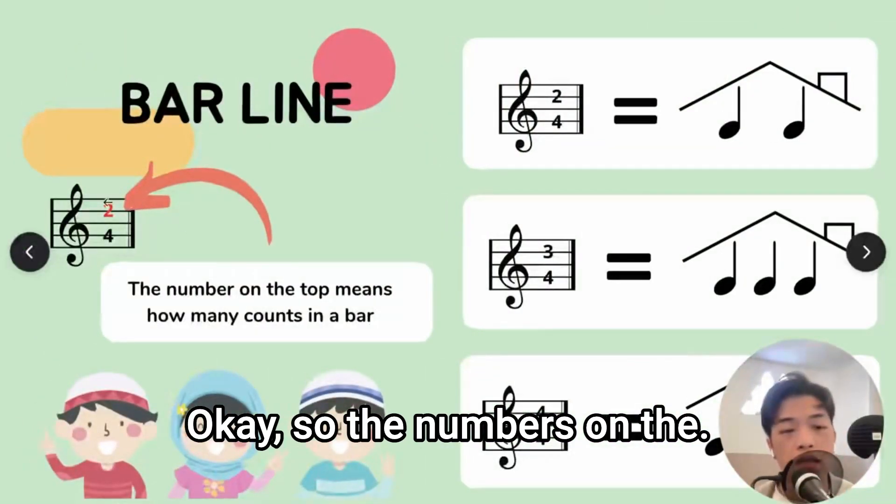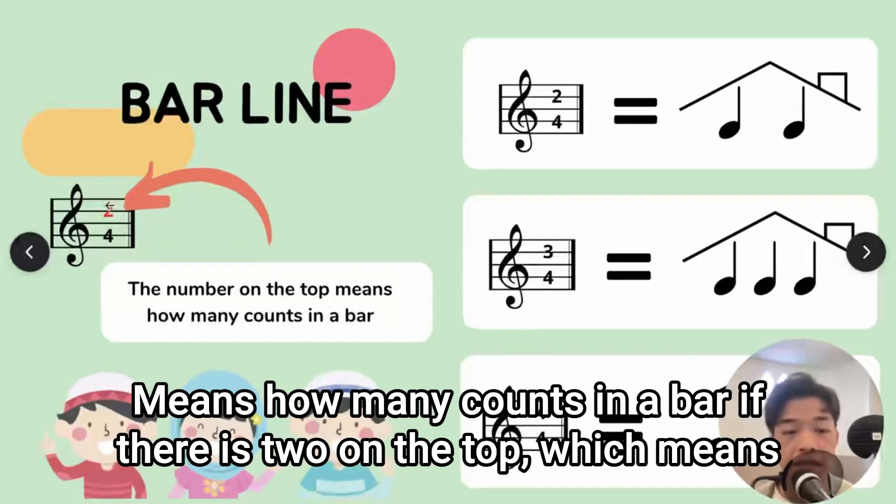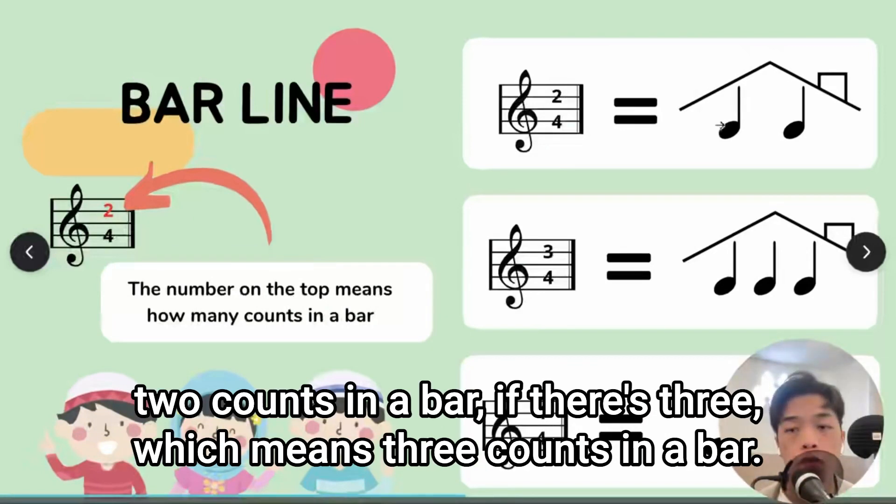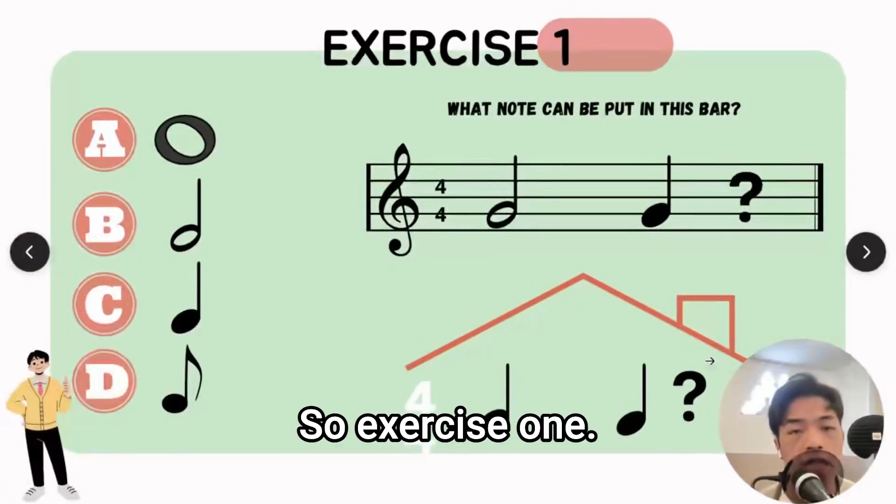The numbers on the top mean how many counts in a bar. If that is two on the top, which means two counts in a bar. If that is three, which means three counts in a bar. So exercise one.